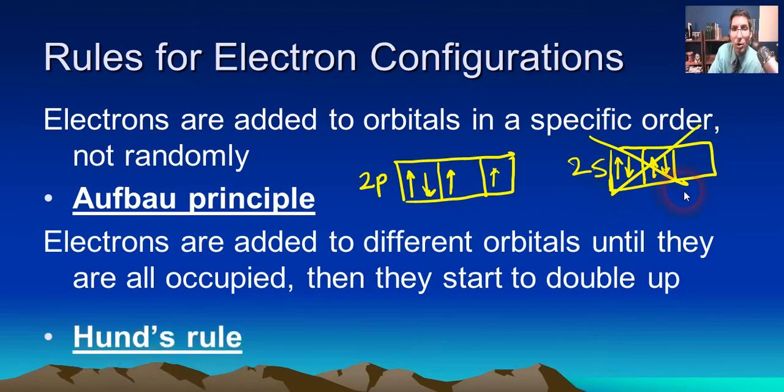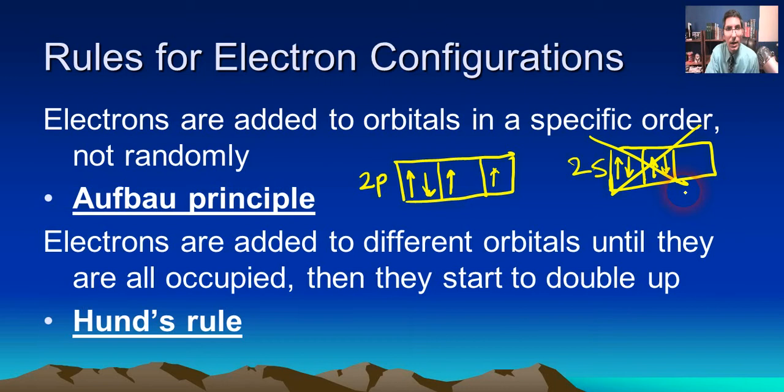The name for this rule is called Hund's rule. Sometimes pronounced Huns rule, but Hund's rule is what this is called. Basically just says one arrow to a box until they all have one. Then you can start to double up. That's Hund's rule.